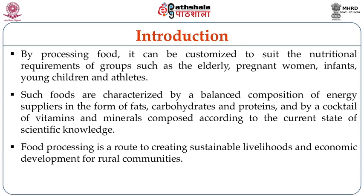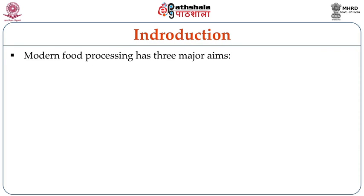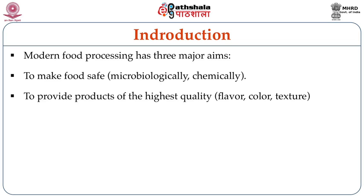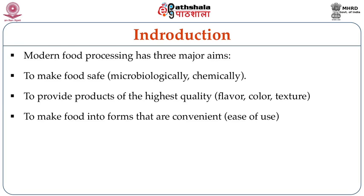Food processing is a way to create sustainable livelihoods and economic development for rural communities. The modern food processing has three major aims. The first is to make sure that the food is safe — safe microbiologically as well as chemically. The second aim is to provide products of highest quality in terms of flavor, color, texture, appearance, etc. The third aim is to make food into forms which are convenient to use, creating ease in using food products.